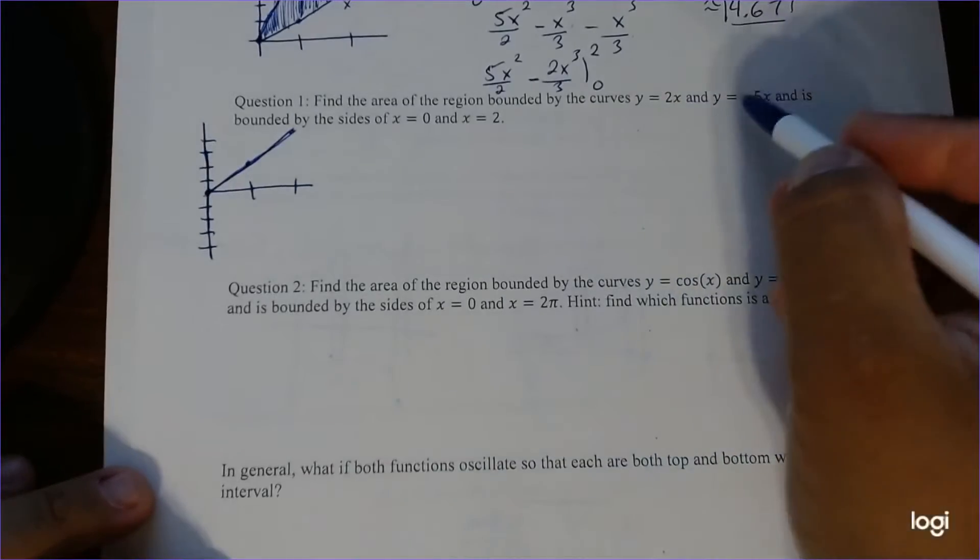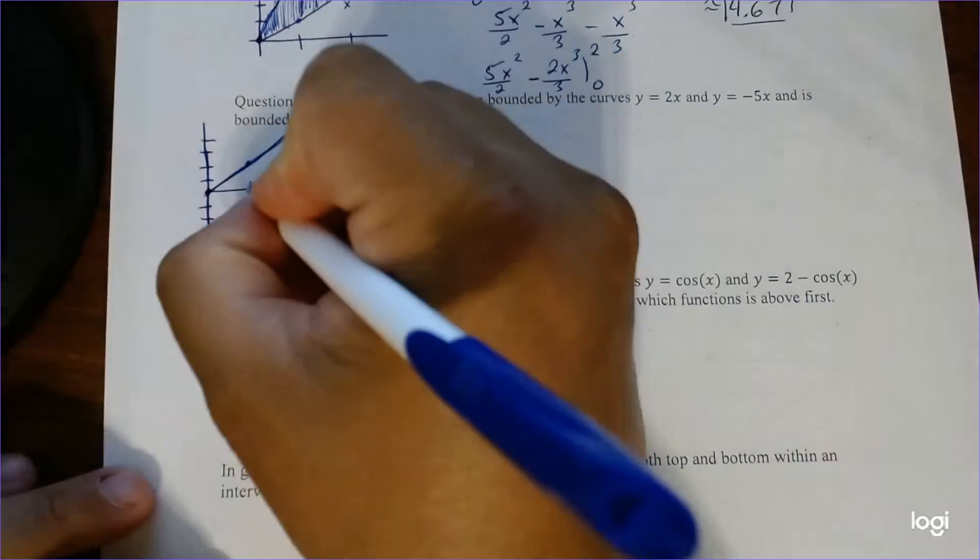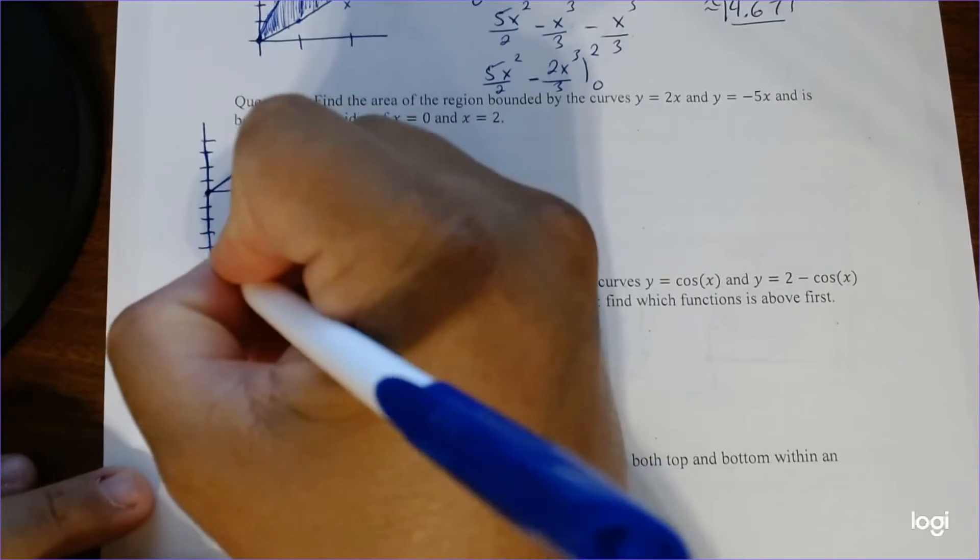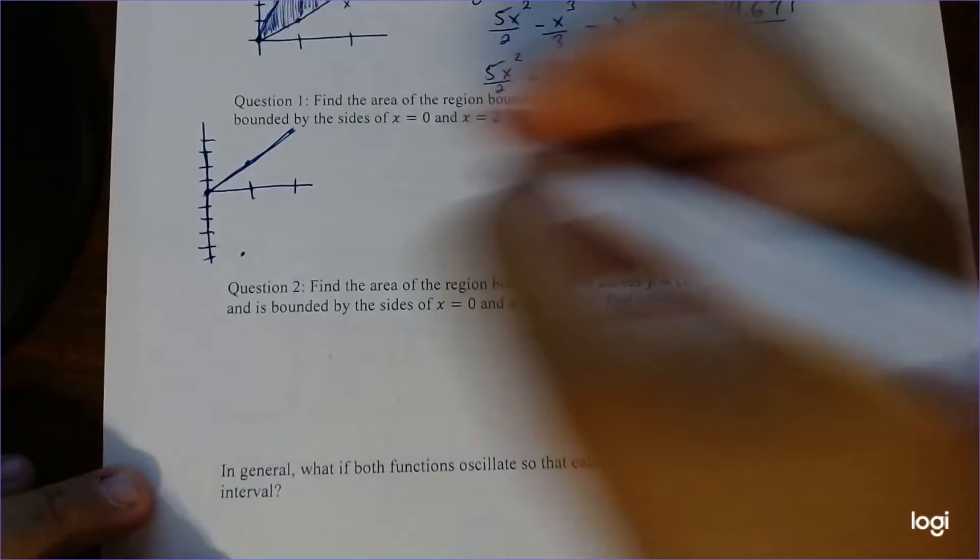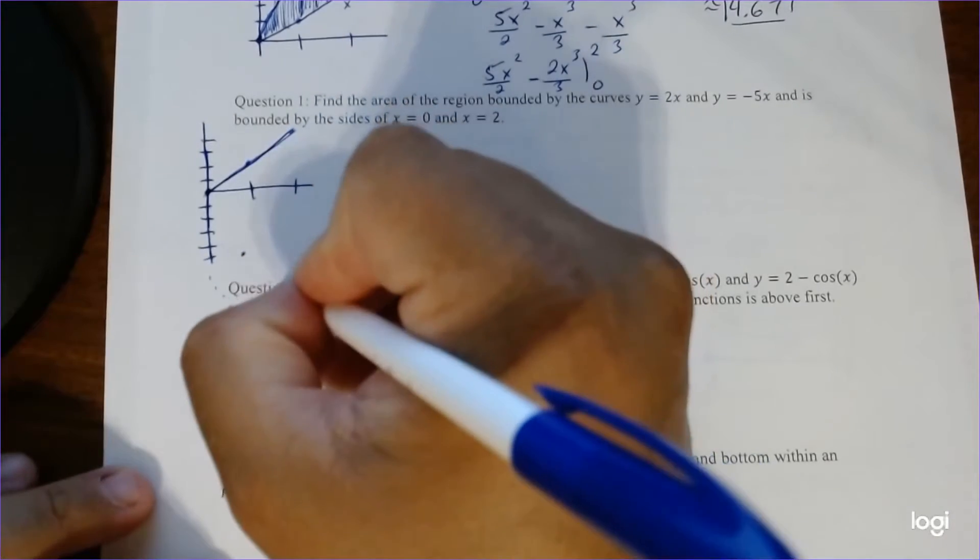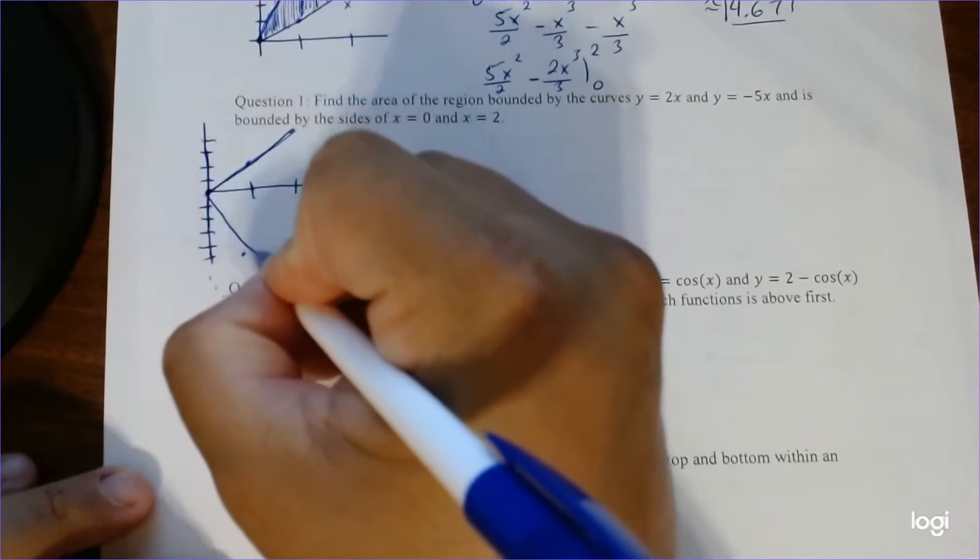And now we graph this one. So same thing. If x equals 0, we get 0. If x equals 1, we get negative 5. And if x equals 2, we get negative 10. So way down here. So let's shoot way down there.